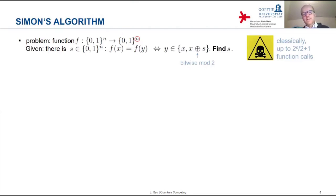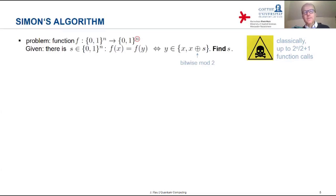You can think for yourself — it's a nice exercise — that if all possible s's are equally likely, you can calculate approximately the expected number of function calls to find s. You will find that the expected number of function calls actually grows a little bit more slowly than 2 to the power n/2 plus 1, but still exponentially — just with a smaller base. It turns out the base is square root of 2.